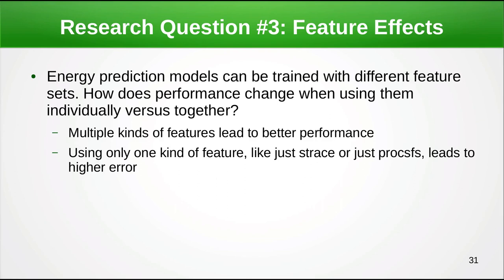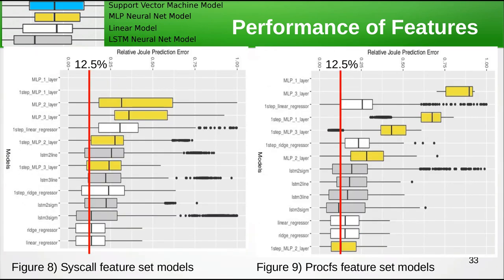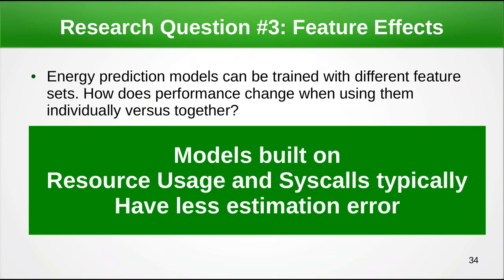Looking at feature effects: how does performance change when using different feature sets individually or together? The question is whether we still need to measure CPU use and syscalls. The full feature set and the green oracle dataset perform reasonably well — looking at the 12.5% threshold line, the full feature set has quite a few models with medians below that. But when we look at the system call feature set and the PROCFS feature set alone, almost all of their models are above 12.5% error. Models built using both resource usage and system calls have less estimation error, and you should probably mix them together.